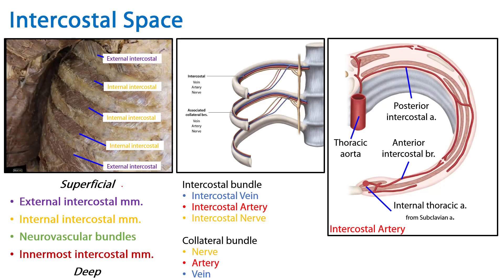In summary, we've discussed the intercostal space: what it is, the various layers of muscle — external, internal, and innermost intercostal — and the relationship of the neurovascular bundle as intermediate between the internal and innermost intercostal muscles. We've also discussed the relative relationships of the neurovasculature to the ribs themselves and the various branches supplying intercostal arteries and veins. Thank you very much for your time.